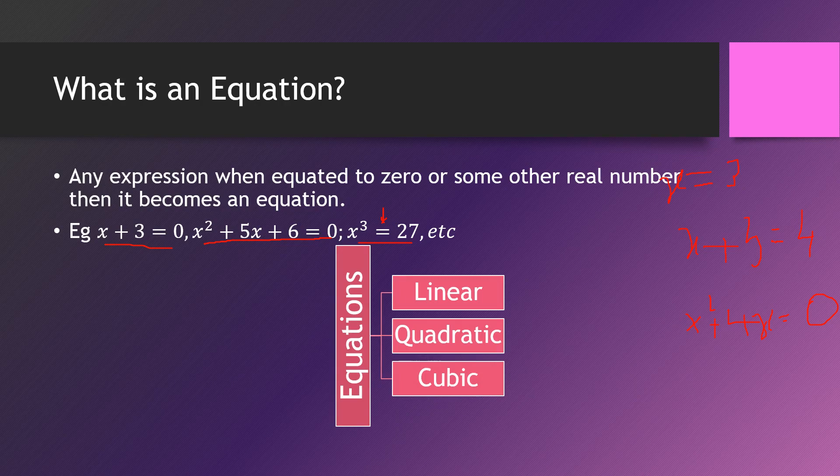In general, a linear equation is of the form ax plus b equals 0, where a cannot be 0 and the highest degree of x should be 1. Then it is a linear equation.